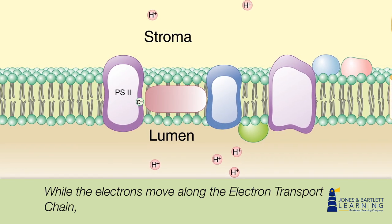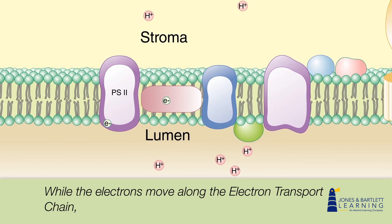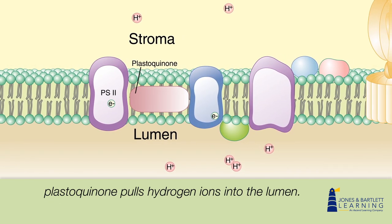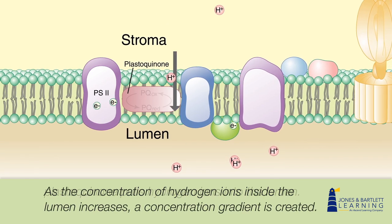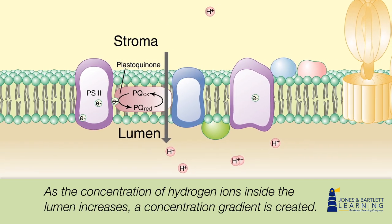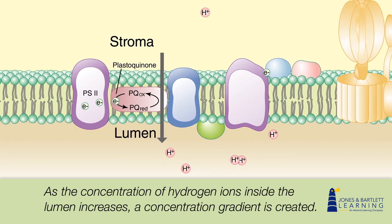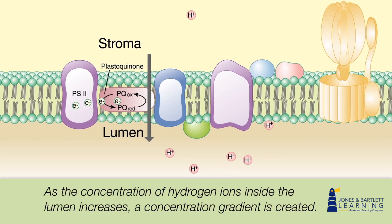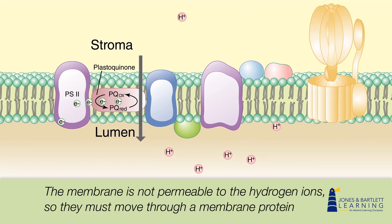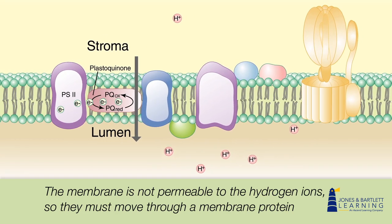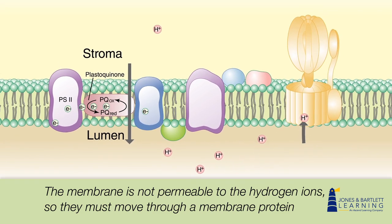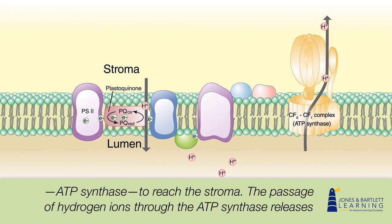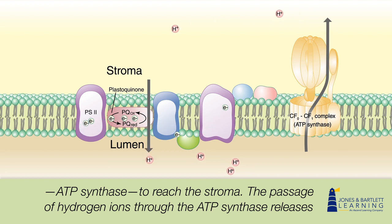While the electrons move along the electron transport chain, plastoquinone pulls hydrogen ions into the lumen. As the concentration of hydrogen ions inside the lumen increases, a concentration gradient is created. The membrane is not permeable to the hydrogen ions, so they must move through a membrane protein, ATP synthase, to reach the stroma.